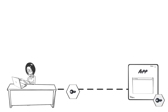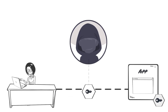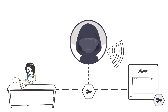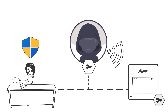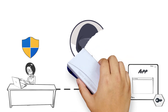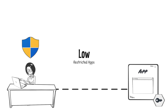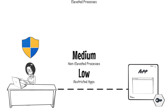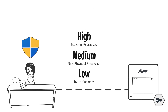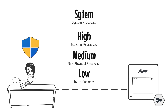To protect access tokens from abuse, such as token hijack or shatter attacks, UAC works alongside Windows memory integrity levels, where applications and processes are assigned an integrity level and are only able to communicate with other applications and processes at the same or lower integrity levels.